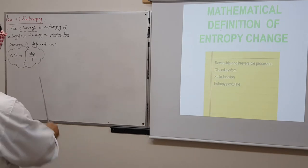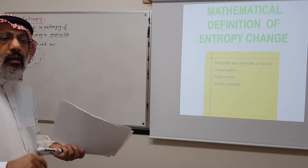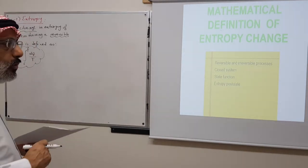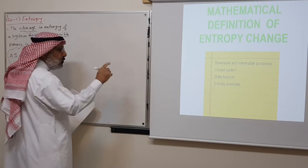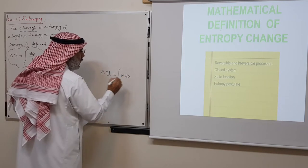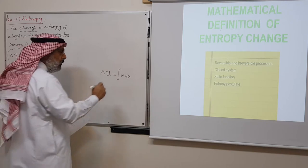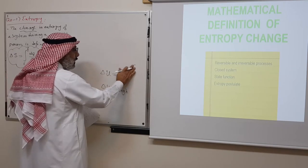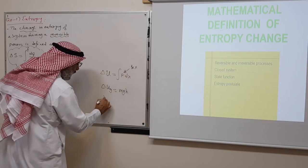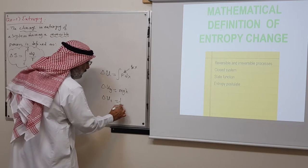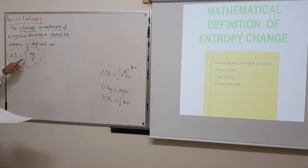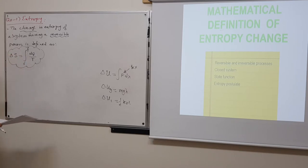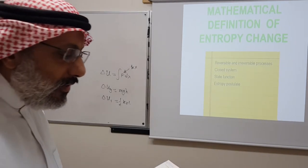To calculate entropy, you must express Q for that process as an equation, plug it into the integral, and carry out the integration. This gives the entropy change for a given thermodynamic process. The definition applies to reversible processes because they can be represented on a PV diagram, giving us a known integration path.